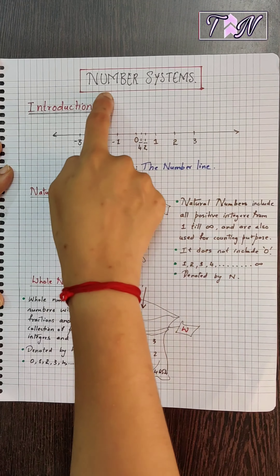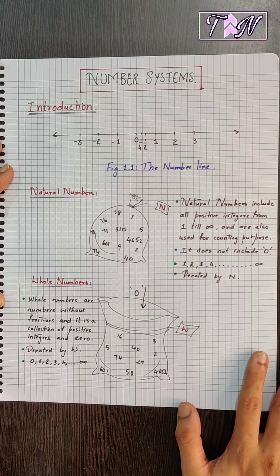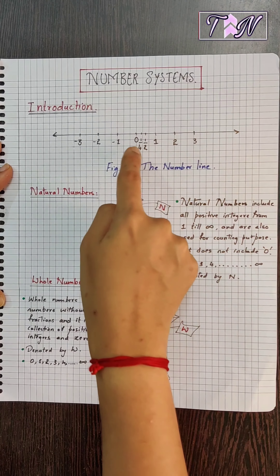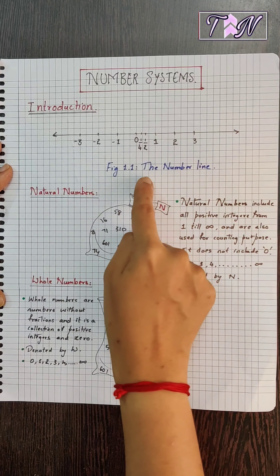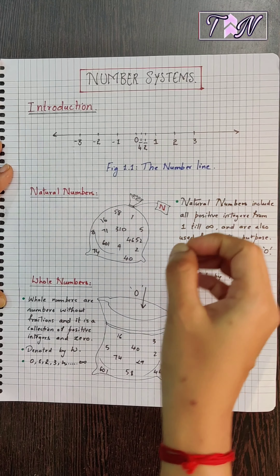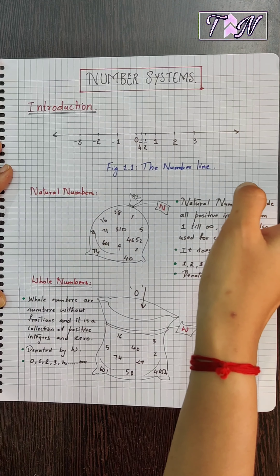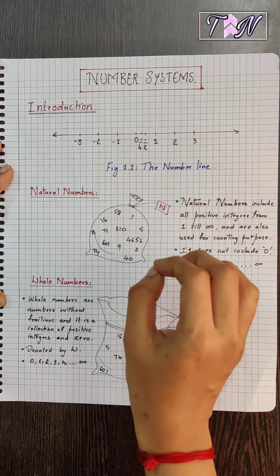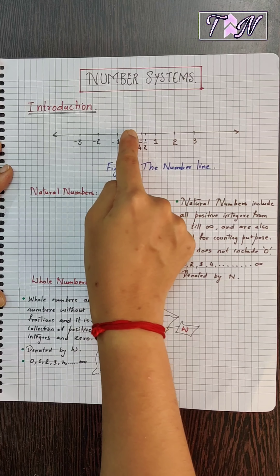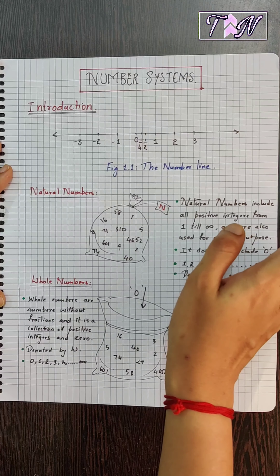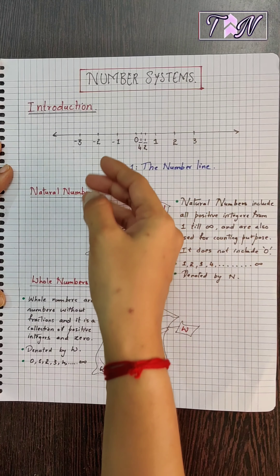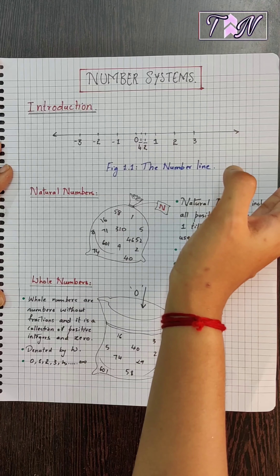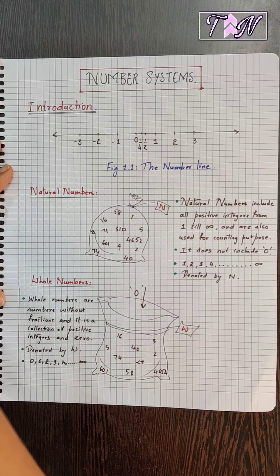Let us look at the next chapter: number systems. This is the introduction part. You might have learnt in your earlier classes how a number line looks and how to represent it. This is figure 1.1 showing the number line. There is a 0 here; the positive integers are on the right side and the negative integers are on the left side. It extends till infinity on the right side and till negative infinity on the left side.